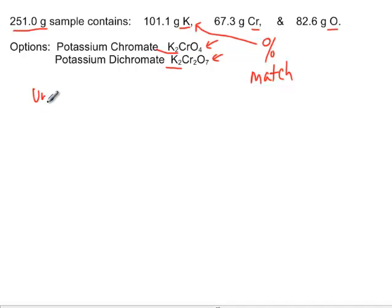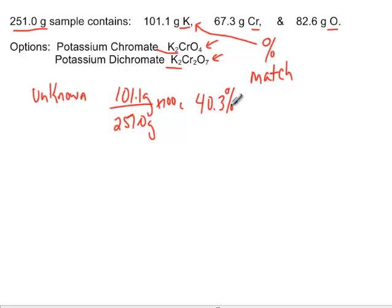Our unknown comes first. We're going to look at the part that's potassium, which is 101 grams, out of the grand total, 251, multiplied by 100. If you look at the math, you'll find out that it's 40.3 percent of the total. So our unknown has potassium in it, and it makes up about 40.3 percent.